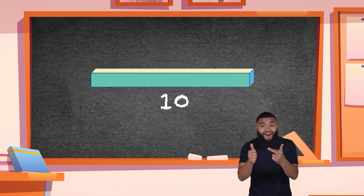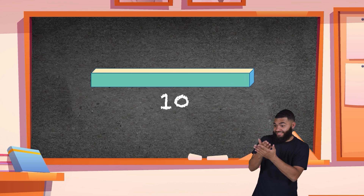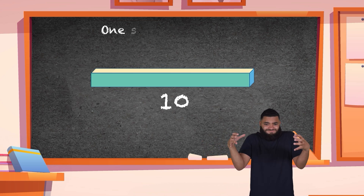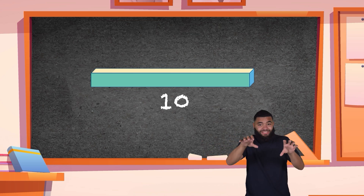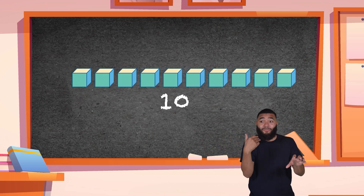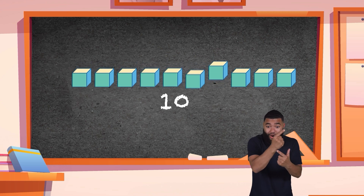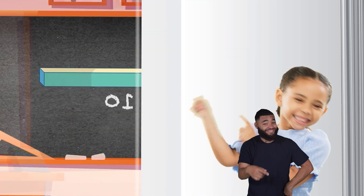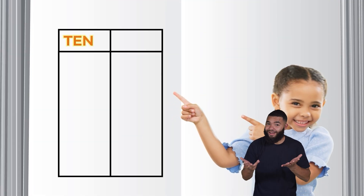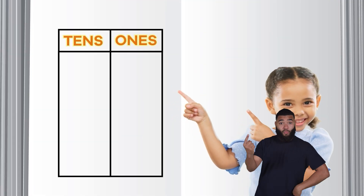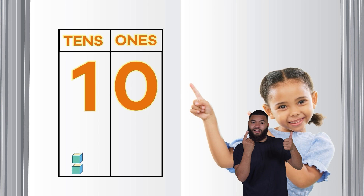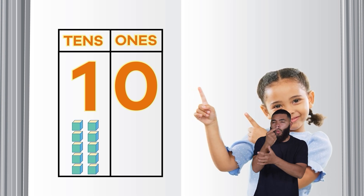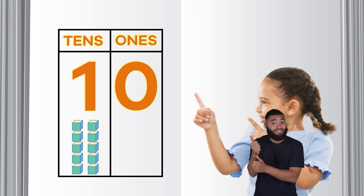Did you see that? When we got to the number ten, the separate cubes joined together to create one super group of ten. Before, they were just ones, all on their own, and now they are joined together in a group. Here's an interesting fact: the number one in the number ten actually represents one group of ten, and the zero represents zero ones.